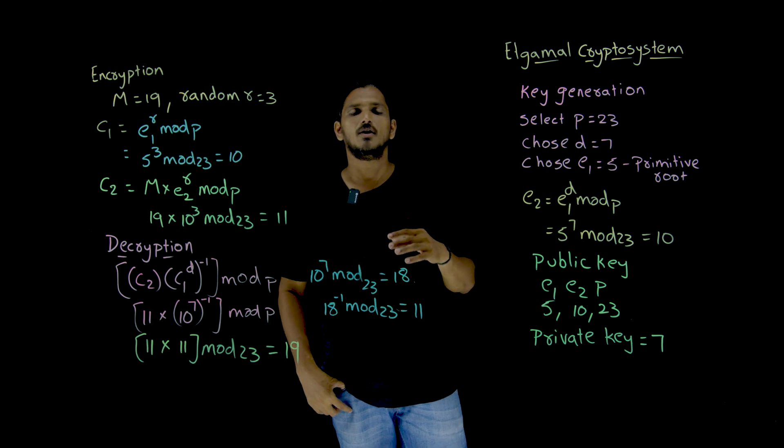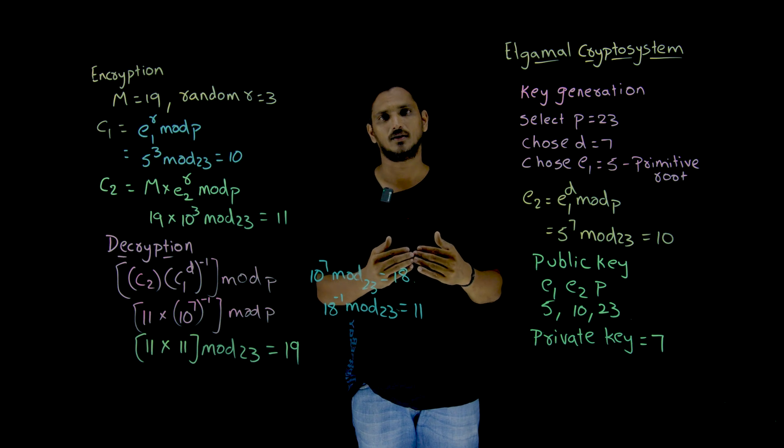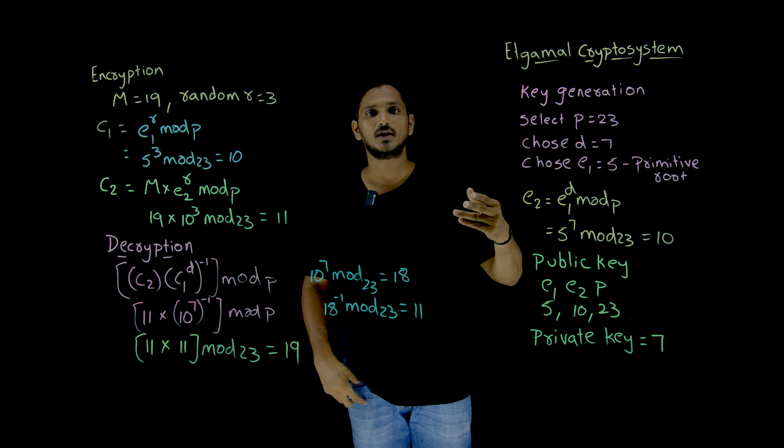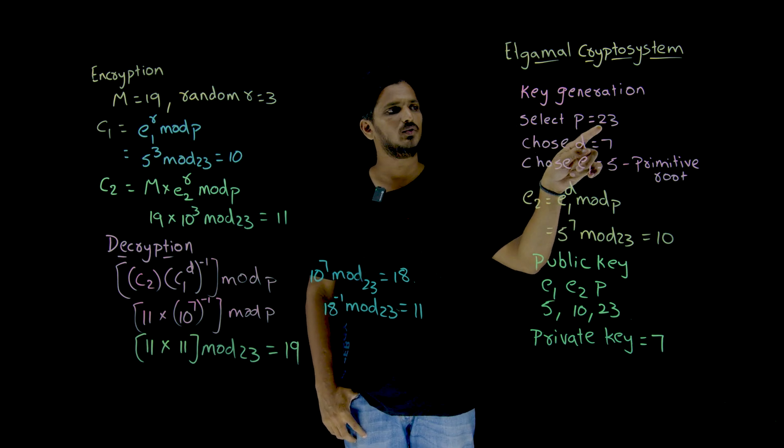Coming to today's class, first we have to generate the public key and private key. The receiver system is going to generate these keys. How these keys are generated? Take this example. First, we need to select a prime number P which is 23.